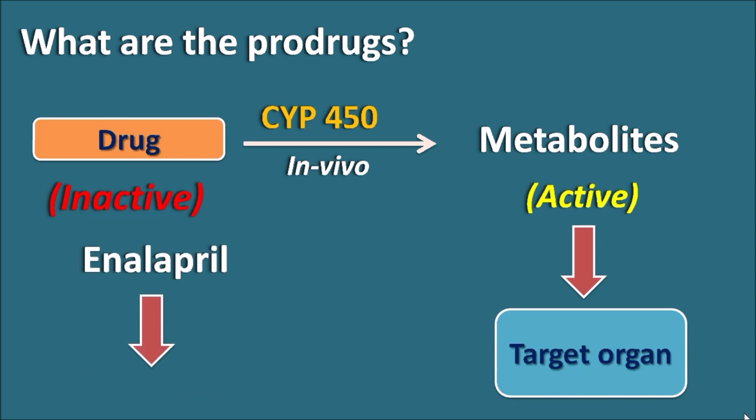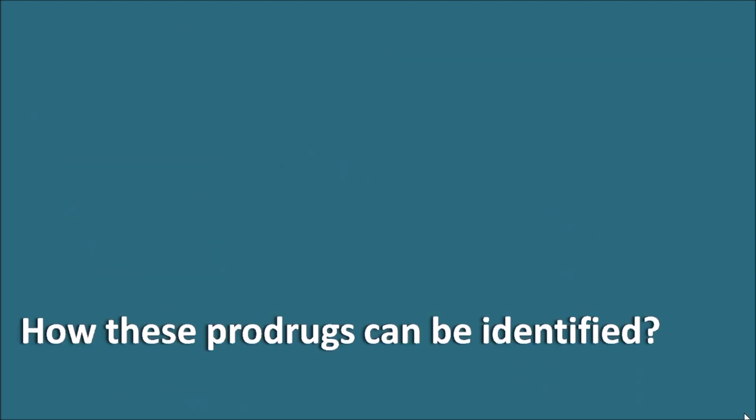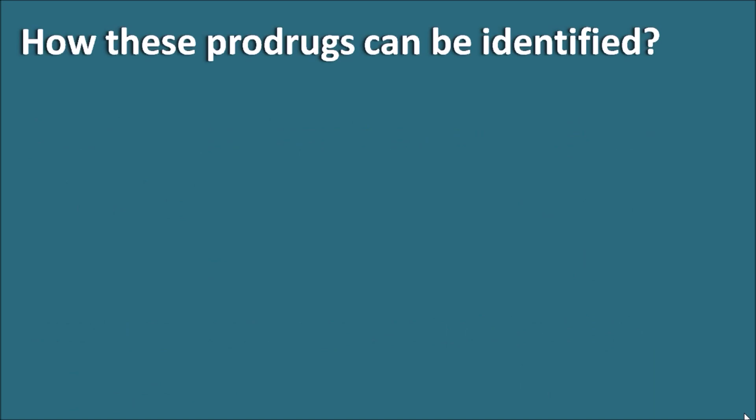You should not confuse this: a drug may be active in its original form as well as in its metabolite form. Such drugs are not considered prodrugs. A prodrug is a drug which is inactive in its original form and is converted to an active form only after metabolism.